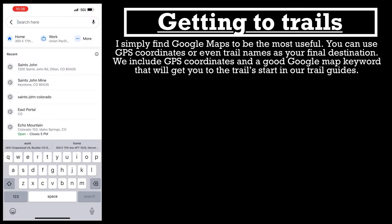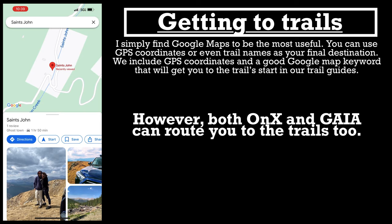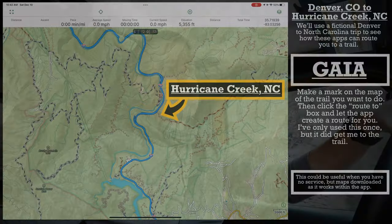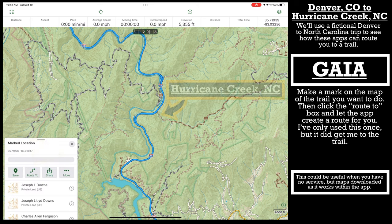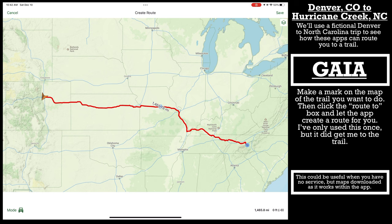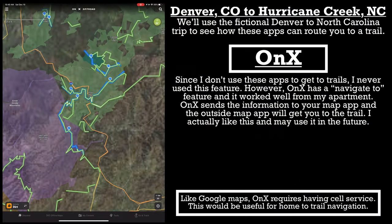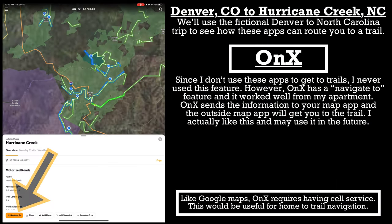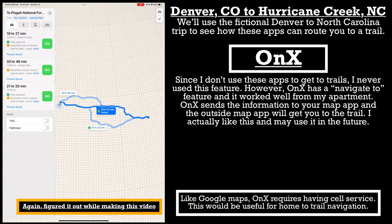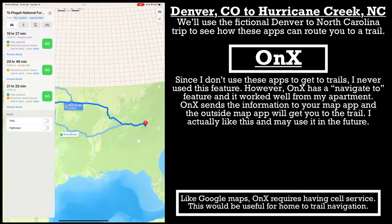For getting routed to trails, I don't think either program is great for that. I actually use Google Maps to get to a trailhead. You can use Gaia GPS — you do your route planning and it'll guide you — but I'd rather use Google to get where I want to go, then start my trip recording from that spot. As far as I know, OnX doesn't support routing, so Google wins here.